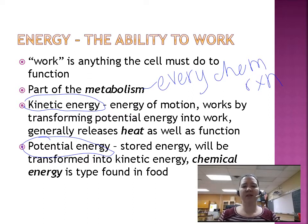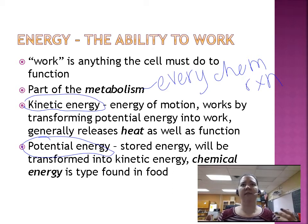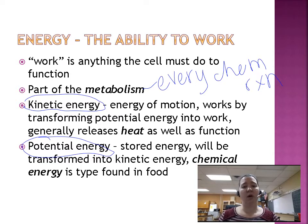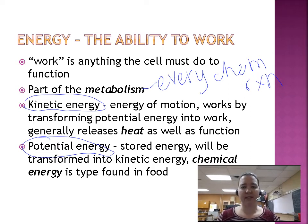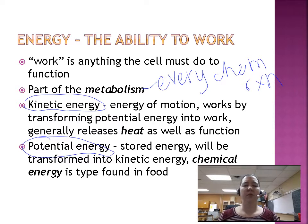Potential energy is stored energy that will eventually be transferred into kinetic energy. Chemical energy is a type of potential energy found in food. All of your food molecules are chemical energy that will ultimately break down through the process of cellular respiration to produce ATP molecules, which will be used whenever we actually need the energy.